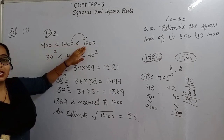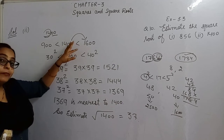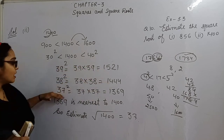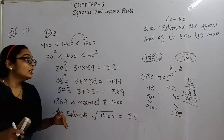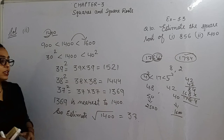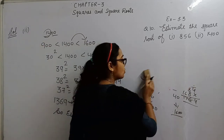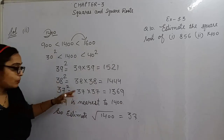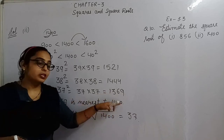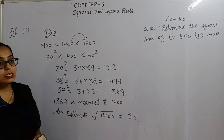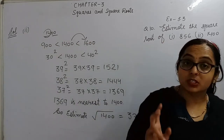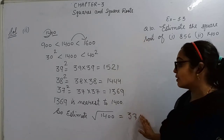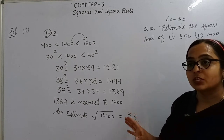So to confirm: 37² = 1369, which is quite near to 1400, and 38² = 1444 is greater. That's why the estimated square root of 1400 is 37. Like in this way you have to solve these questions. I hope these two questions are now clear to all of you. Write the presentation in the same way in your notebook. Thank you very much.